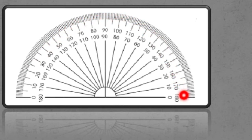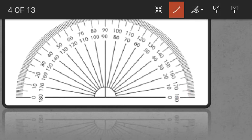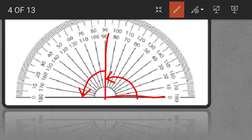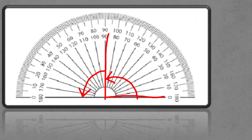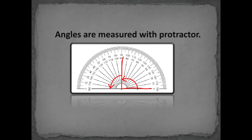Any angle which lies between 0 degrees to 90 degrees is called an acute angle. An angle whose measure is exactly 90 degrees is called a right angle. Any angle whose measure lies between 90 degrees and 180 degrees is called an obtuse angle. Now let us learn about the various types of angles in detail.